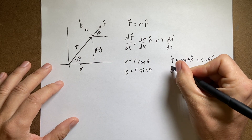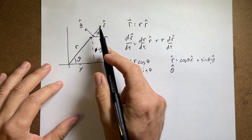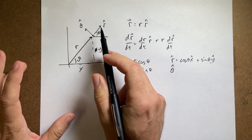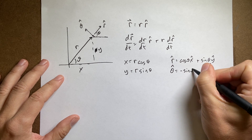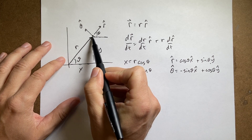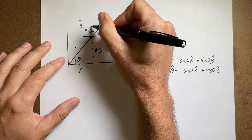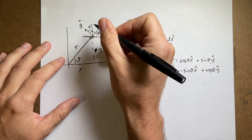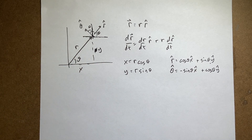Now, what about theta_hat? Theta_hat must be perpendicular to r_hat — if you don't have perpendicular unit vectors you're setting yourself up for a world of hurt. So I'll write theta_hat as -sinθ * x_hat + cosθ * y_hat. The y-component is cosθ and the x-component is -sinθ, which gives a vector perpendicular to r_hat.